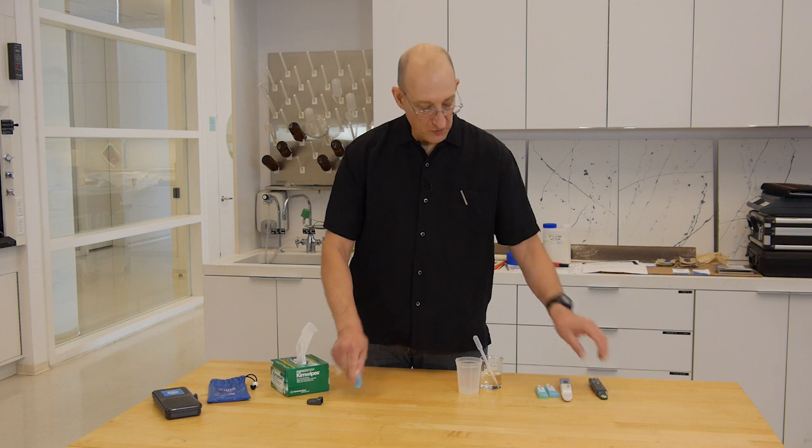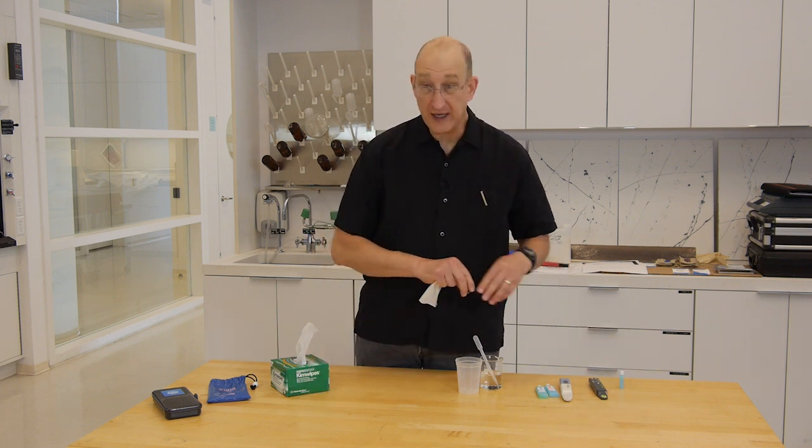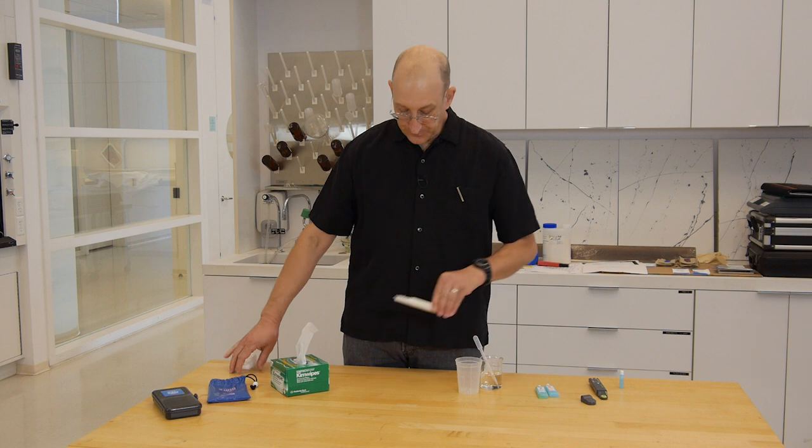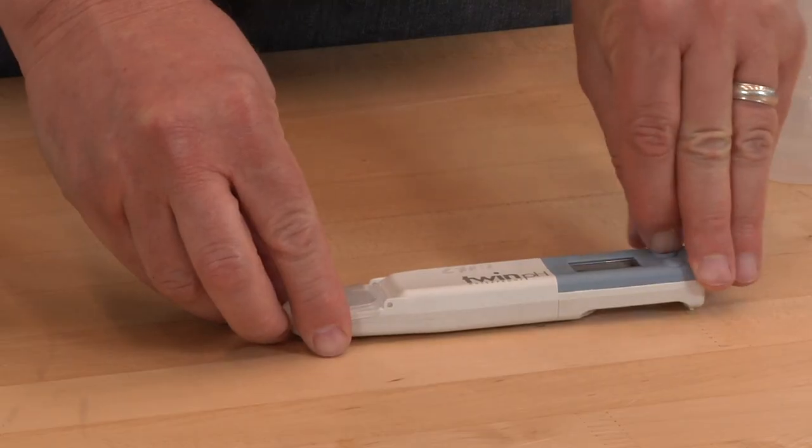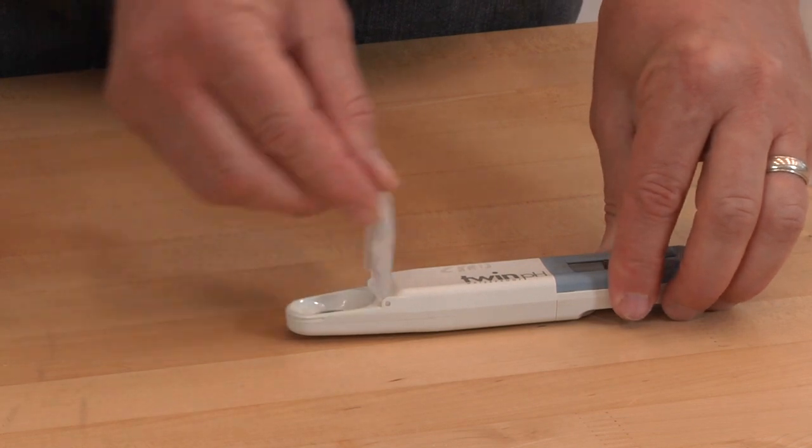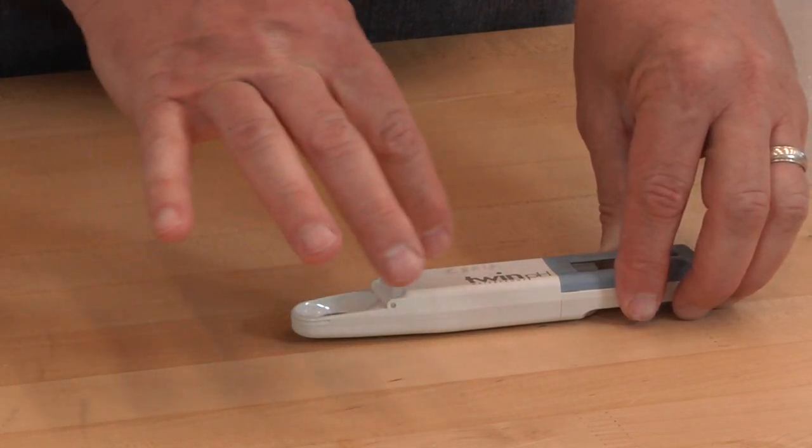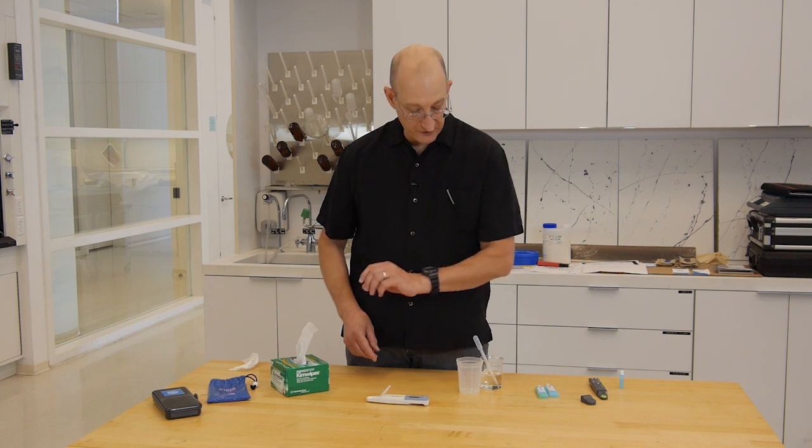For the pH meter, it's more or less the same process, except we're going to calibrate to two points. Again, we turn the meter on and open the sample well. If you prefer, you can take this little flap off. I like to leave it on to protect the electrode.